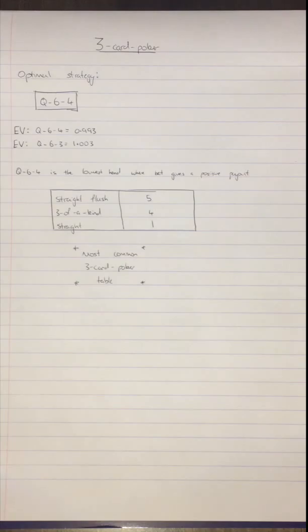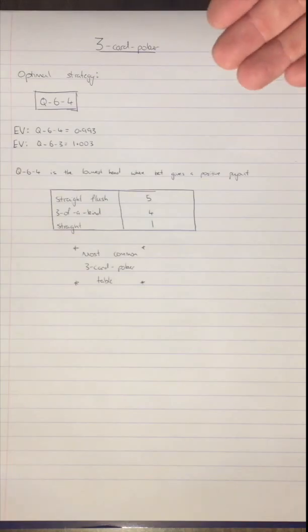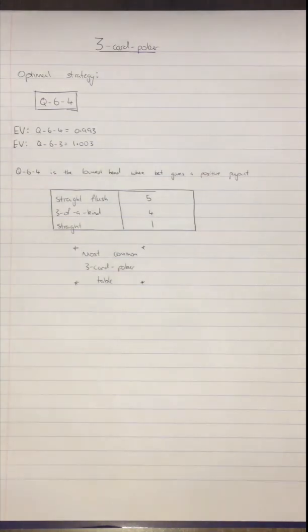This means that the highest card is a queen and then the second highest is a 6 and the third highest is a 4 or anything better than that. This is because the estimated value for a queen, 6, 4 is 0.993 and the estimated value for queen, 6, 3 which is the one hand lower is 1.003.